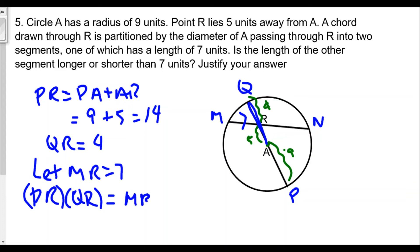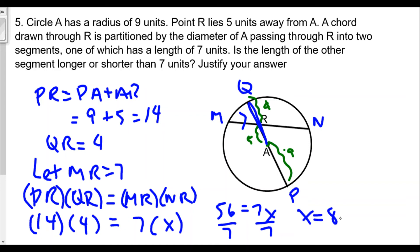For our question, we're going to set PR times QR and let that equal MR times RN. So we'll take 14 times 4 equals 7 times x. Now 14 times 4 is 40 plus 16, so we get 56 equals 7x. We divide both sides by seven.